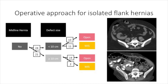For isolated flank defects, the operative approach taken was related to hernia size. Isolated defects less than 10 centimeters wide were repaired with both open and MIS approaches, while those greater than or equal to 10 centimeters wide were nearly always repaired open due to the technical challenges presented by the bony and neurovascular structures located adjacent to the defect.